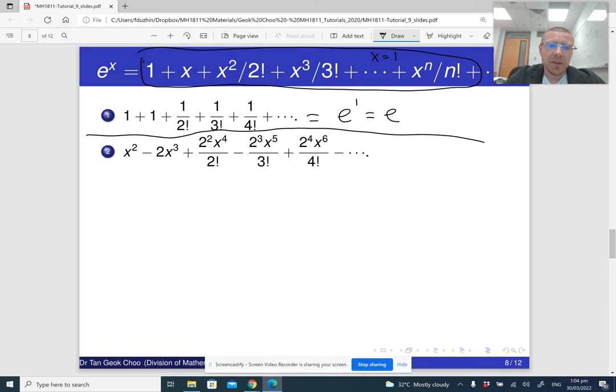Okay, so second power series. In the second power series, notice that it begins with x squared. So basically, we can take out x squared. Let me first take out x squared. So then I'm going to get one minus two x plus two squared x squared. So this is two x squared over two factorial minus two cubed. Well, it looks like two cubed x cubed. But this is just really two x cubed.